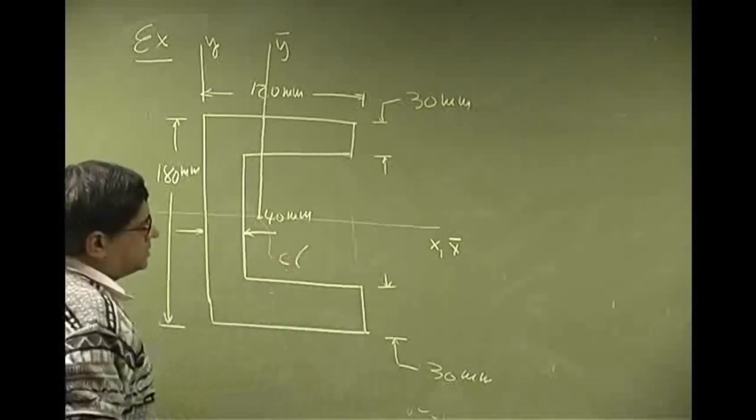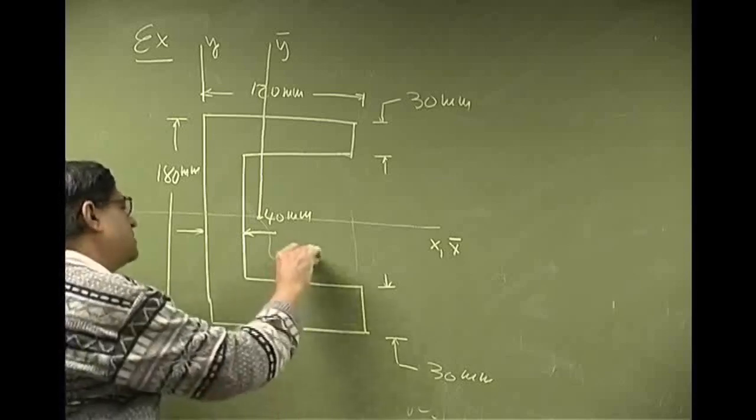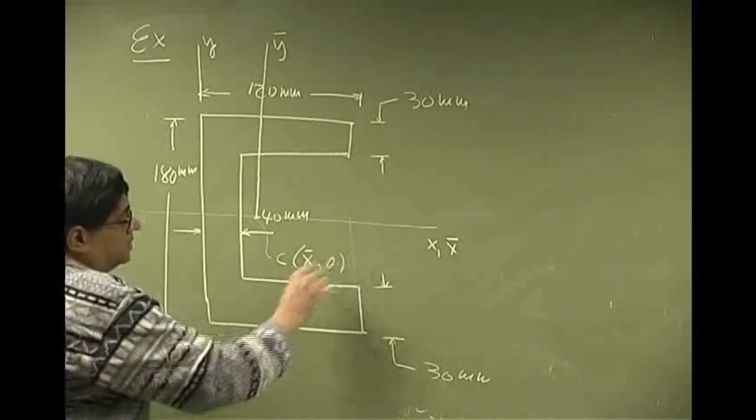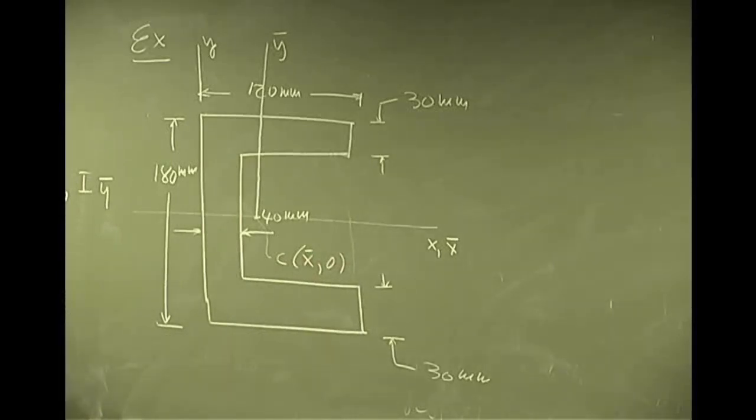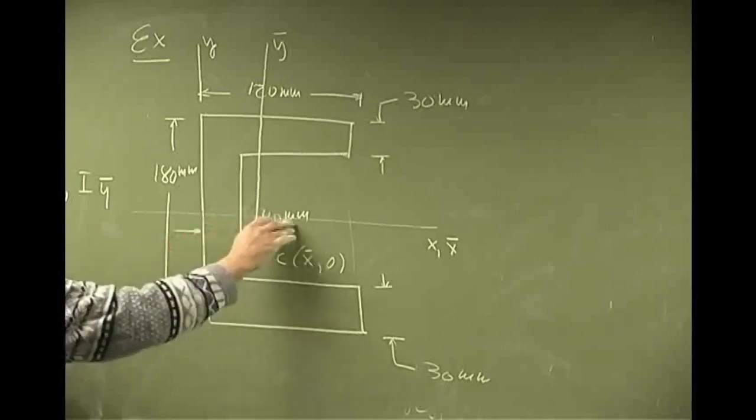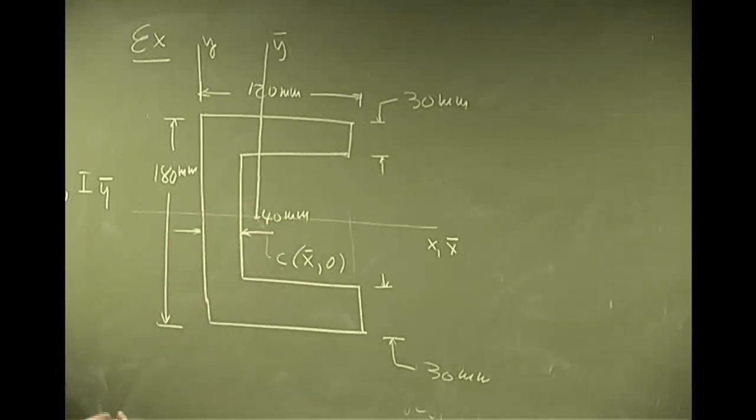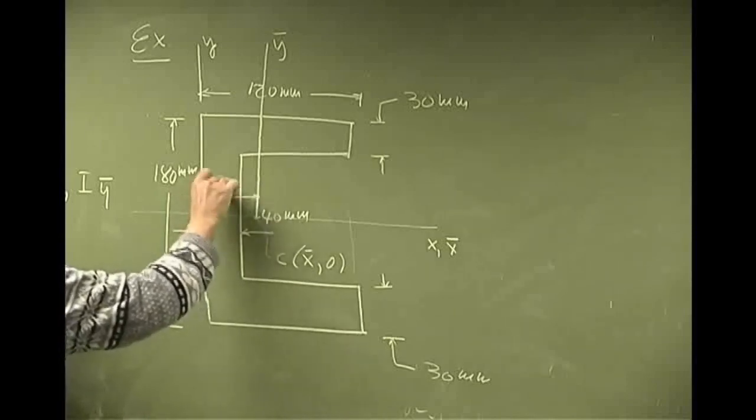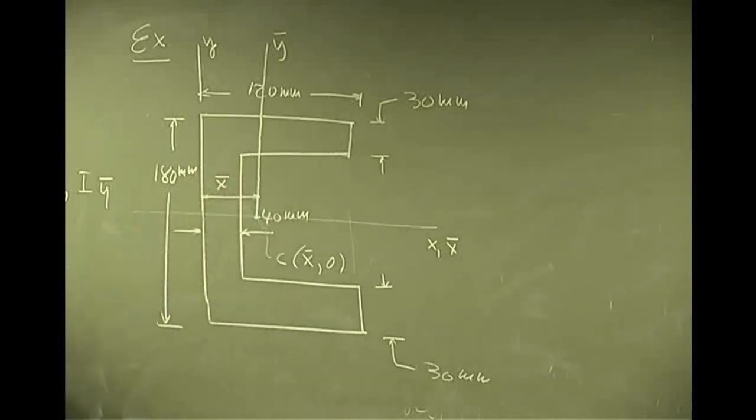And it also means that the centroid is really being at x-bar and 0. It has to be on this line. So it should be on x-axis. That means the y-coordinate must go to 0. So this distance here is going to be x-bar.